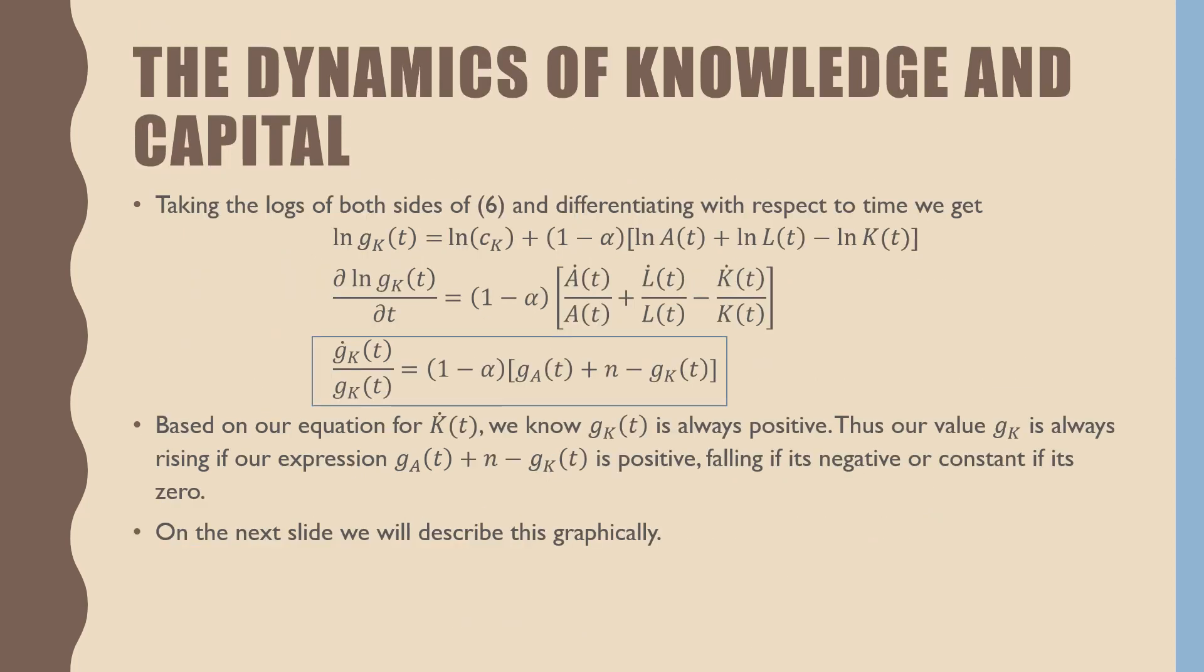Taking the logs of both sides of equation six, which was the last equation on the previous slide, and differentiating with respect to time, we get our growth rate of capital stock transition equation, which is equal to one minus alpha times our growth rate of technology plus our population growth rate minus our growth rate of capital at a single point in time.